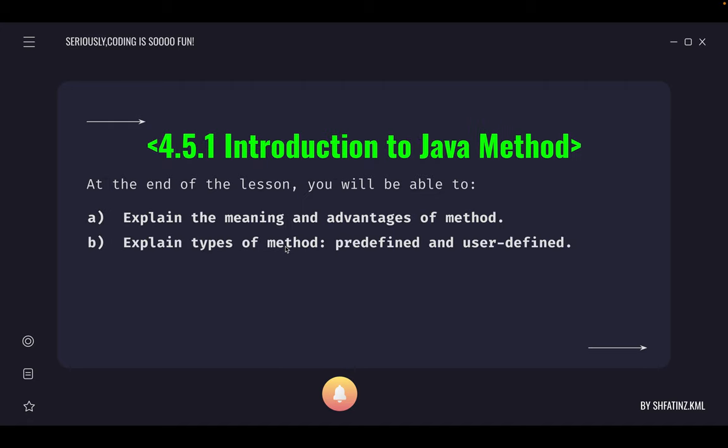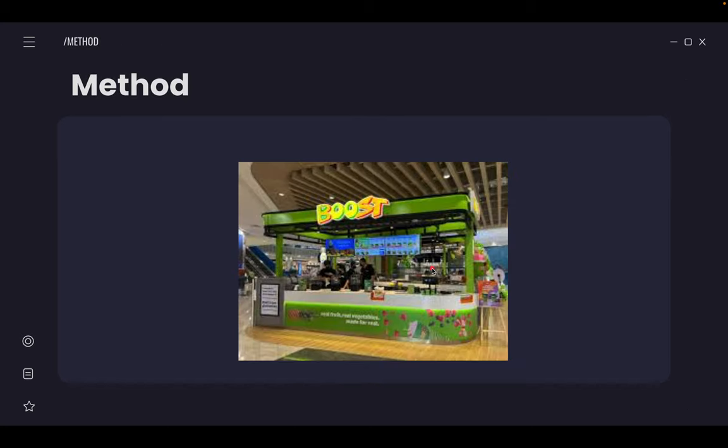At the end of this first subtopic 4.51 Introduction to Java Method, you will be able to explain the meaning and advantages of method, and explain two types of method which are predefined method and user-defined method.